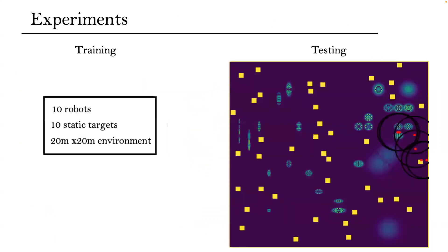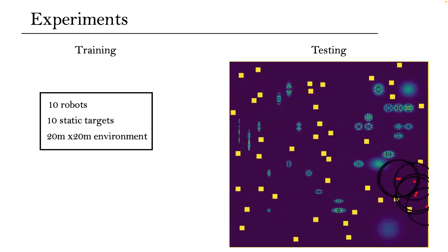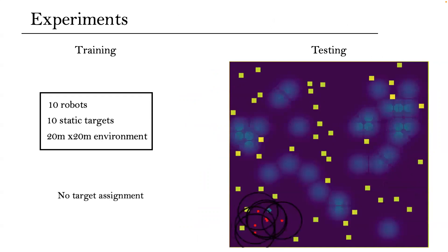An example of how our network performs can be seen on the right. Six robots are deployed to localize 30 static targets on a new environment. It should be mentioned that the target assignment is a behavior completely learned by the network itself.